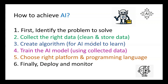The fifth step is to choose the right platform and programming language. Apart from the data required to train the AI model, you have to pick the right platform and programming language, such as Python or JavaScript, in order to achieve the goal. The final step is to deploy and monitor. After you have developed a solution, you can ensure it keeps performing well by monitoring the operation constantly.